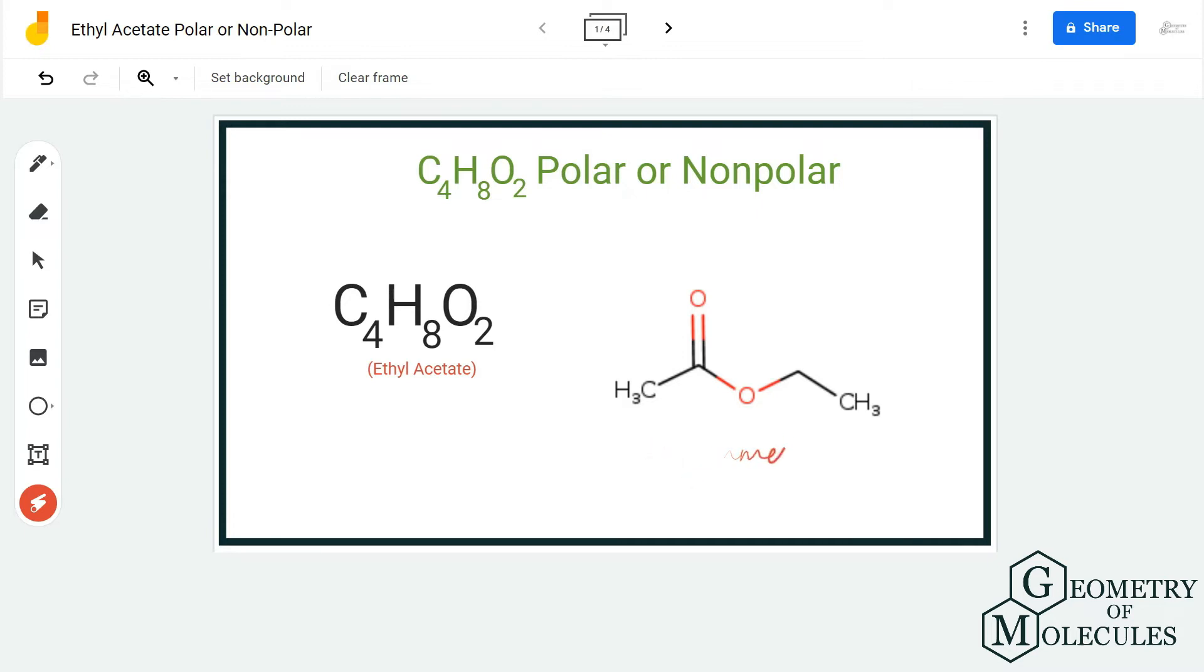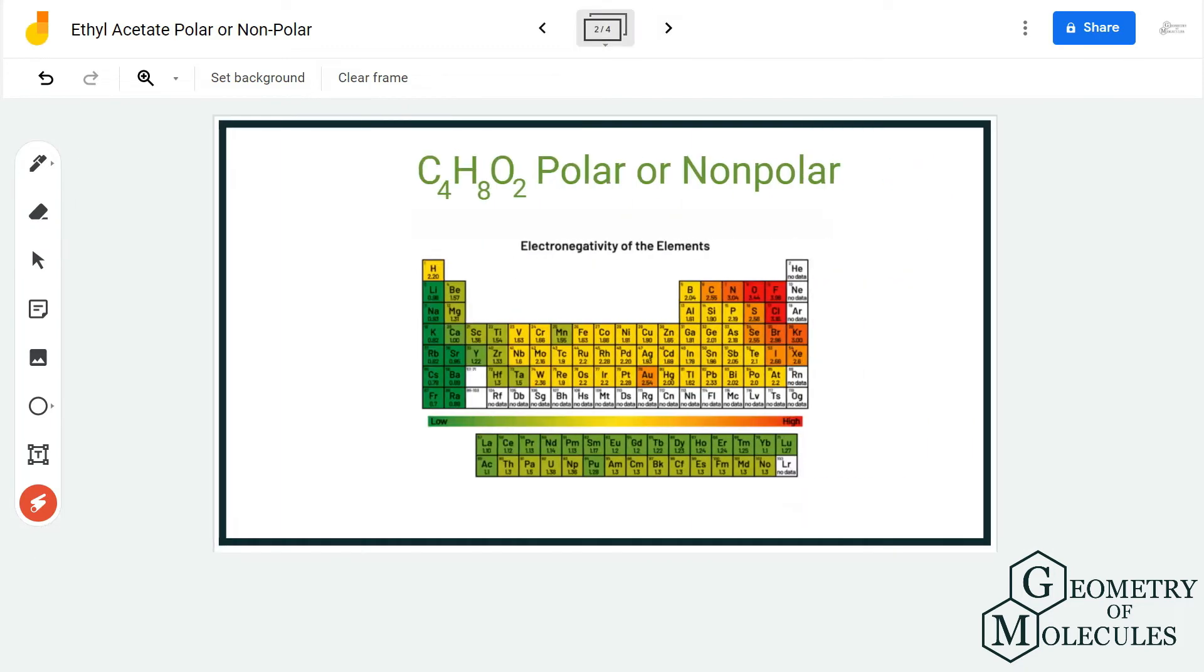the one causing this asymmetry, and hence it becomes important to check its polarity. Now that we know its structure and shape, we can move forward and check the difference in electronegativities between the atoms involved.